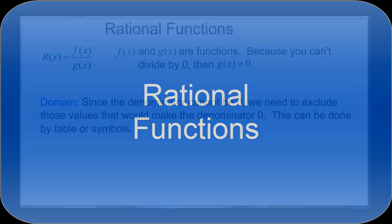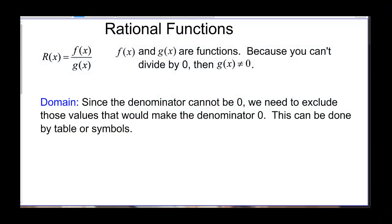This video is going to talk about rational functions. A rational function is a function that's made up of f of x divided by g of x. They're both functions, and because you can't divide by 0, we have to make sure that g of x is not equal to 0. Which brings us to the domain. The domain of a rational function is those values in the denominator that would cause it to be 0, so we have to restrict those values. And this can be done either with a table or with symbols, and we'll do both.